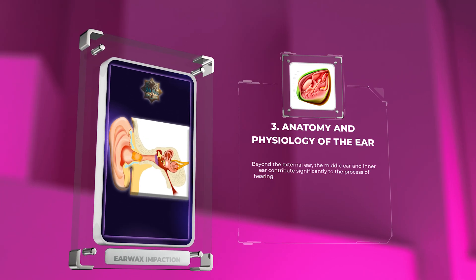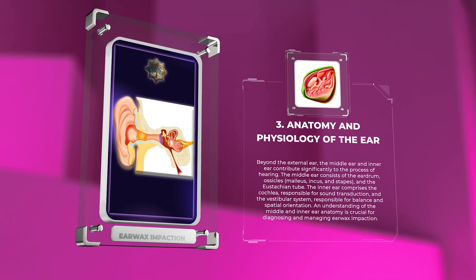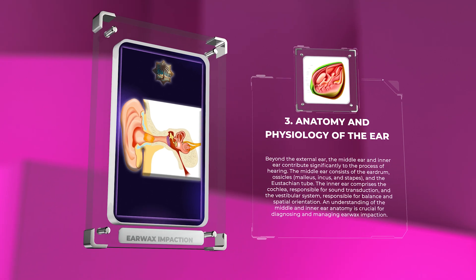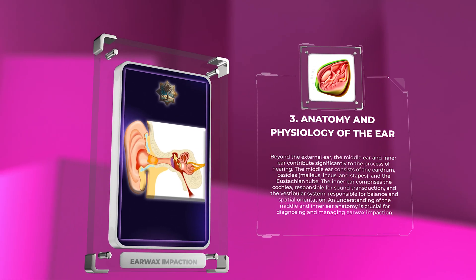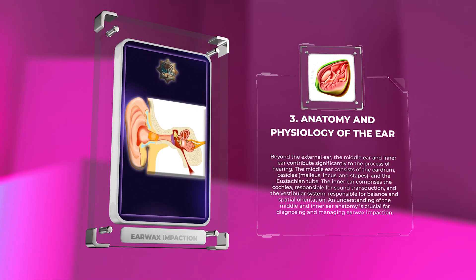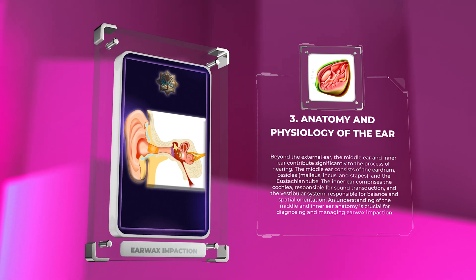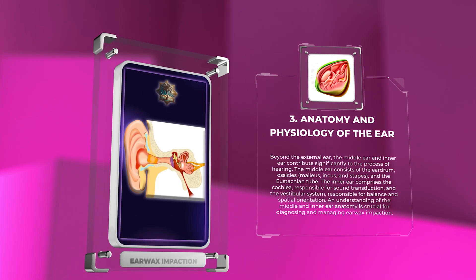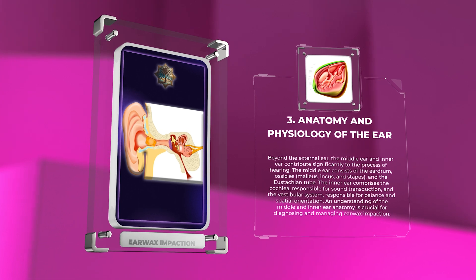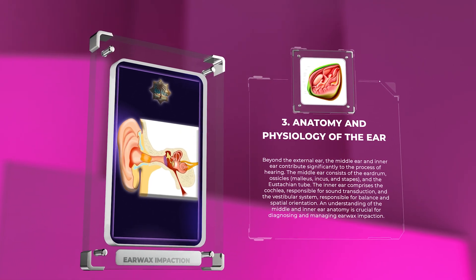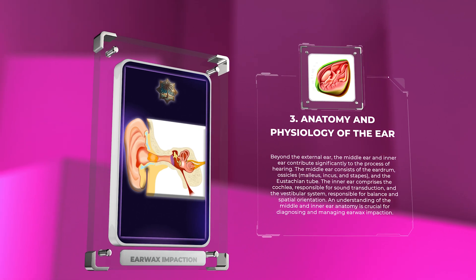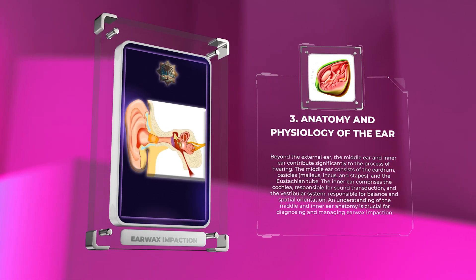Beyond the external ear, the middle ear and inner ear contribute significantly to the process of hearing. The middle ear consists of the eardrum, ossicles — malleus, incus, and stapes — and the eustachian tube. The inner ear comprises the cochlea, responsible for sound transduction, and the vestibular system, responsible for balance and spatial orientation. An understanding of the middle and inner ear anatomy is crucial for diagnosing and managing earwax impaction.